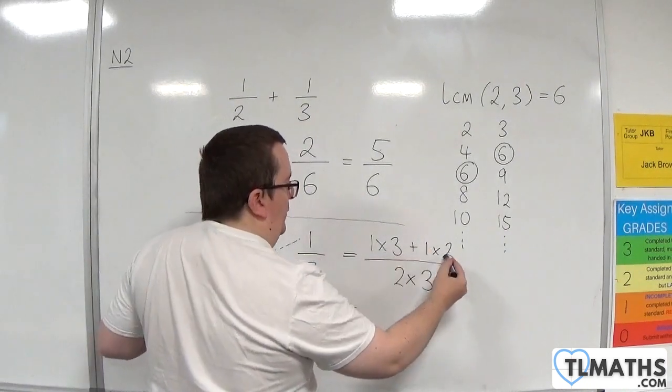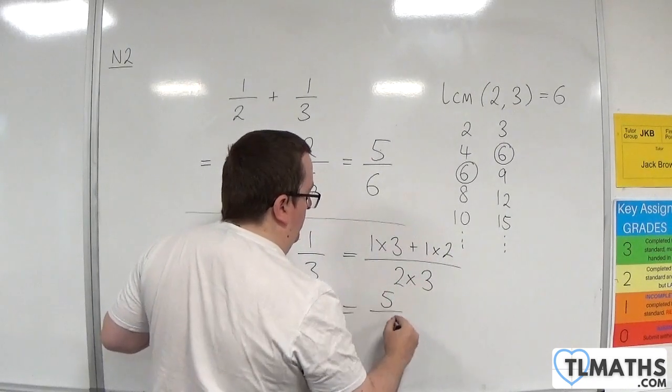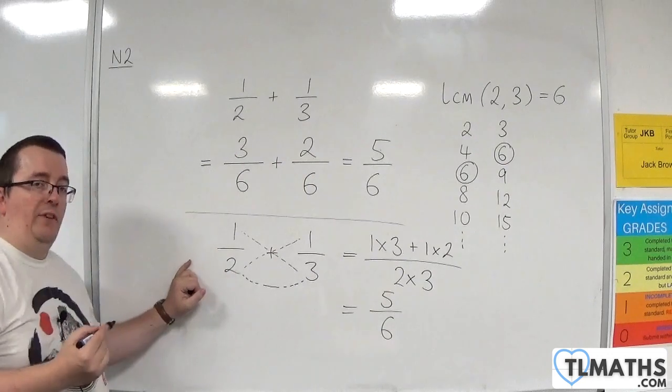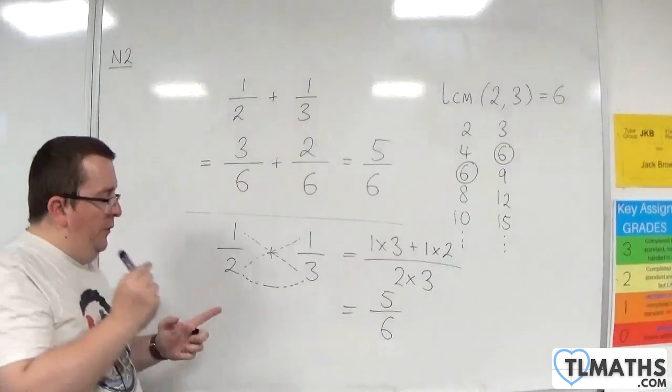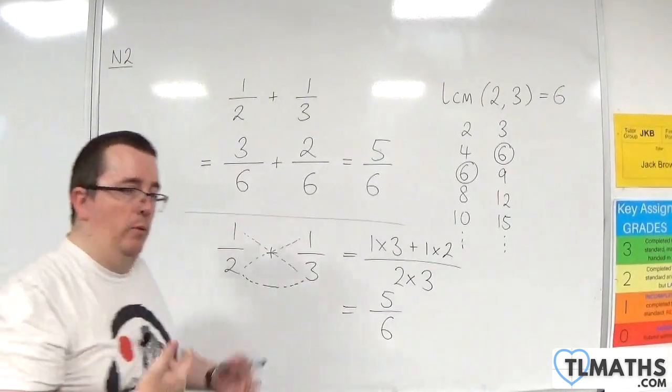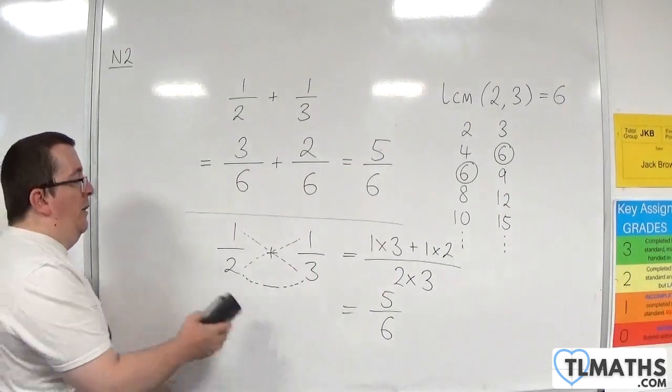So we get 3 plus 2, which is 5, over 6. And so you get the same answer. And that is cross multiplication. So what we'll do is we'll go through one more example of these, and then I'll go through some more examples in the next video as well.